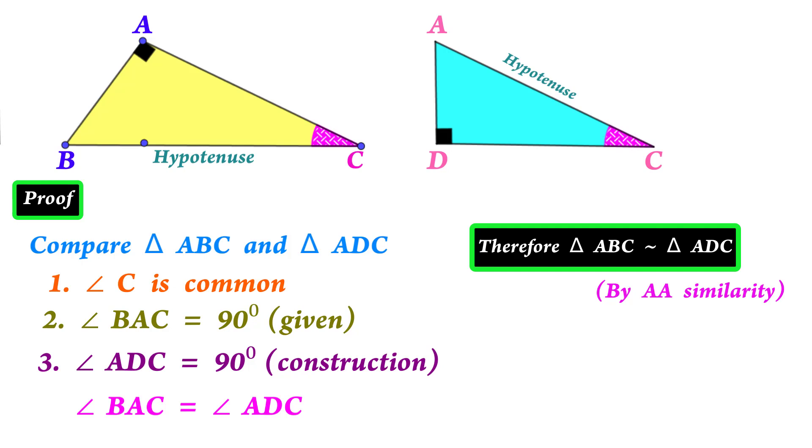In the same style, here C is common. BC by AC, as BC is hypotenuse. Then AC by CD, as AC is a side. Cross multiply to get AC² = BC × DC.